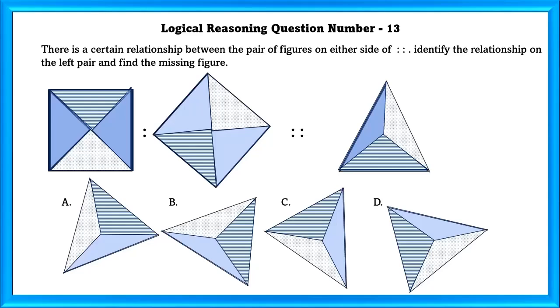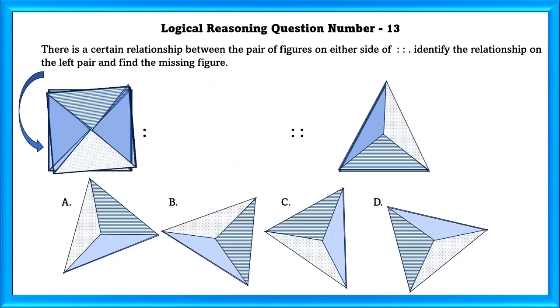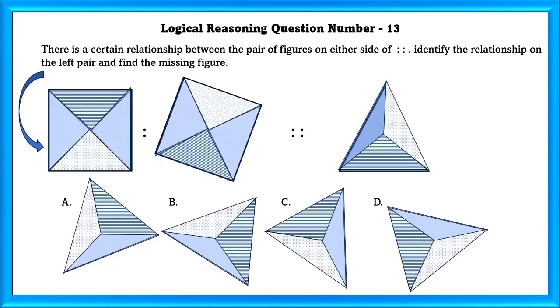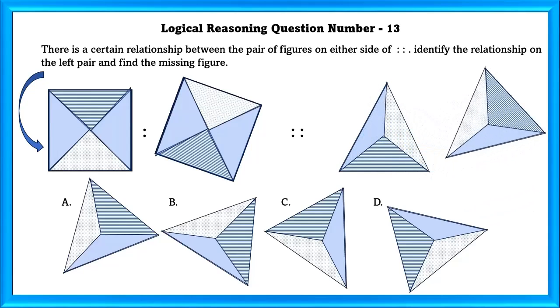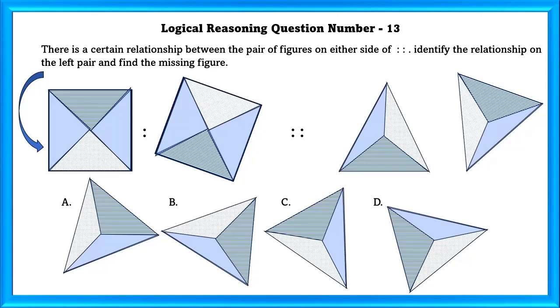Logical Reasoning Question Number 13. There is a certain relationship between the pairs of figures on the either side of the dots. Identify the relationship on the left pair and find the missing figure. So the relationship what we found here is that this figure is being rotated anticlockwise. So similarly, if we rotate this figure anticlockwise, we will get this. So our answer is A.